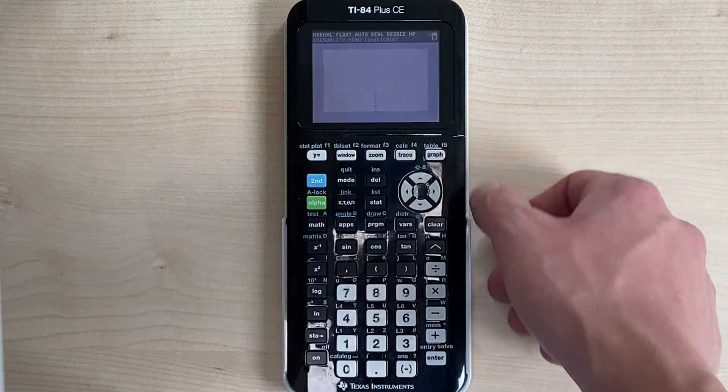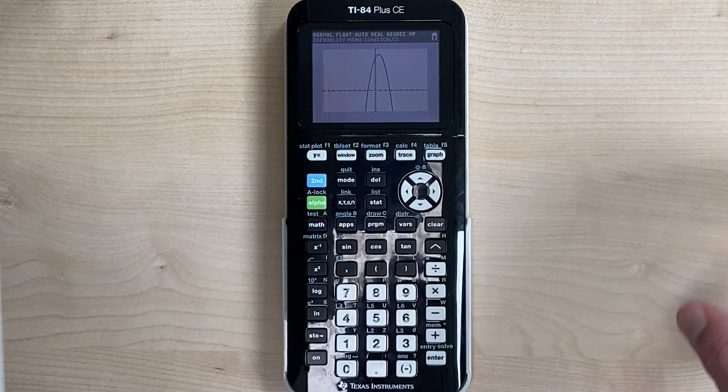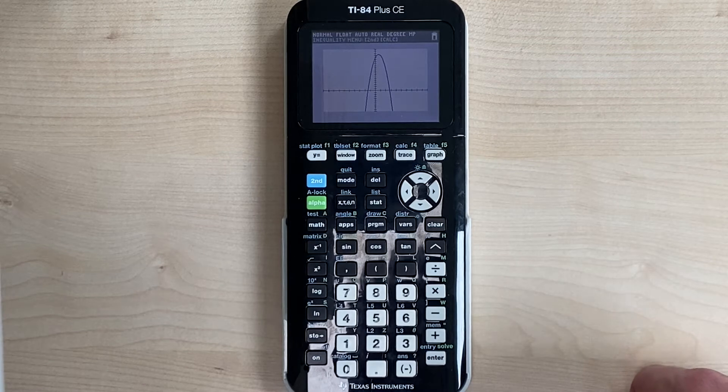So now we hit graph, and now we can see the vertex of our parabola. So our window is good. That is the basic premise of the window function.